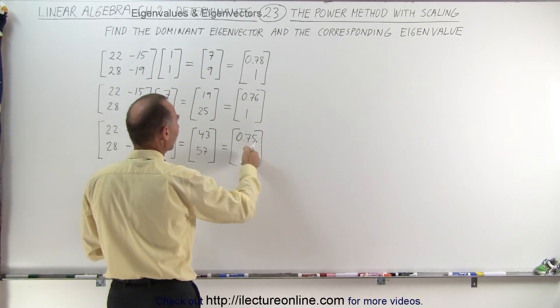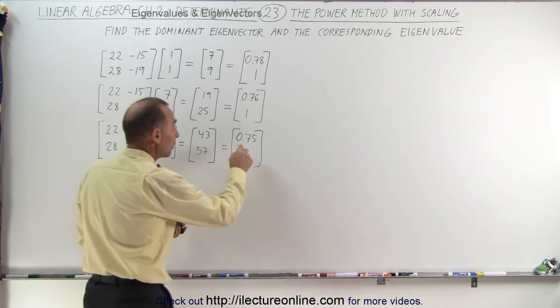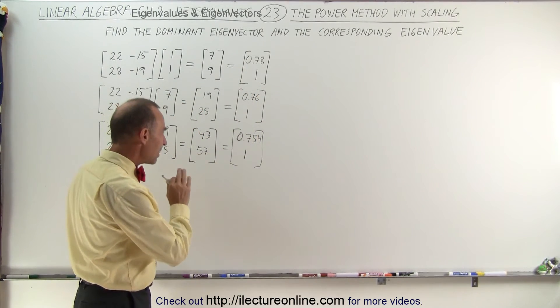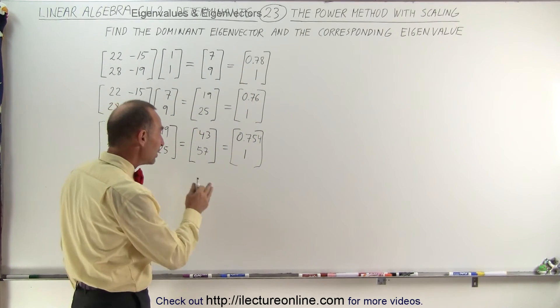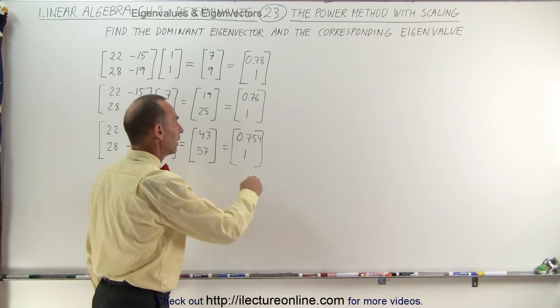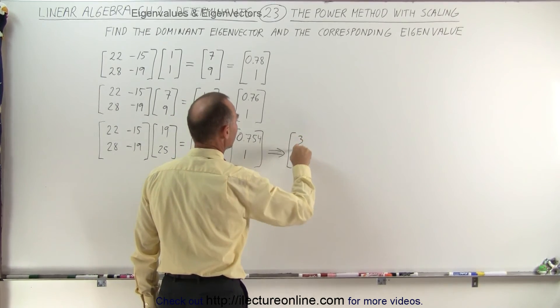Now this appears to be converging to 0.75 and 1. If I write one more decimal place it would be 0.754. Now this appears to be converging to a 3 to 4 ratio. If I multiply the top by 4 and the bottom by 4, this looks like this is converging to a ratio of 3 to 4.